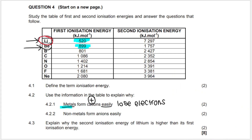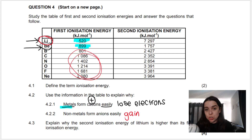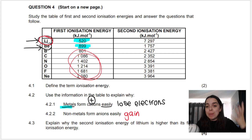Use the information in the table to explain why non-metals form anions easily. Anions form when you gain electrons. The non-metals in the table have much, much higher ionization energies than metals. That means they have such a high ionization energy that it is so difficult to take away electrons from them. They instead want to get extra electrons, basically to form an anion and reach stability.